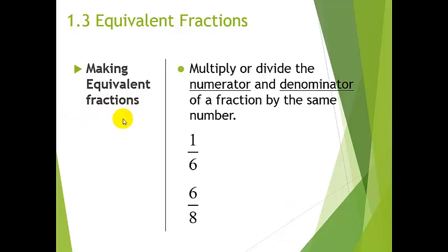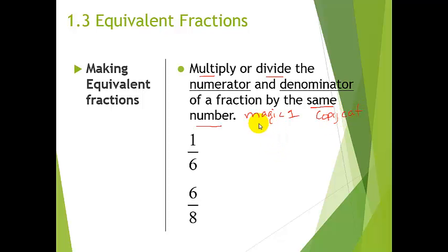To make equivalent fractions, you either multiply or divide the numerator — the top number — and the denominator by the same number. Some students call this the 'magic one,' and Danica calls it the 'copycat.' I'm going to pick the copycat of 2, which is 2 over 2. Since this value equals 1, I'm not changing the value of the fraction — just the way it looks.